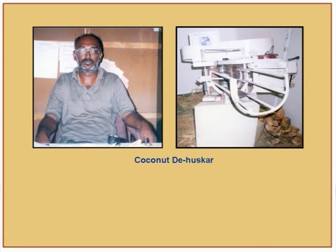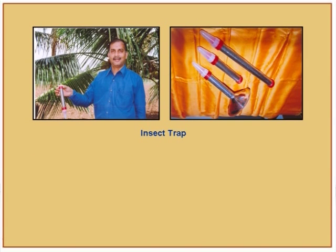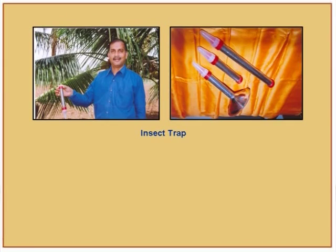Another innovator based out of Coimbatore came up with a coconut de-husker, addressing a huge labor problem since coconuts are widely available but nobody to de-husk them. Dr. Mohan created a simple mechanical insect trap for post-harvest grain storage. Currently, farmers add banned poisons like Malathion to keep insects away. This device has perforations all around it — you insert it where grains are stored, and insects seeking air enter and fall down, unable to get back up, controlling exponential insect growth.